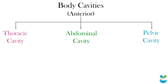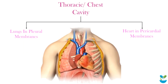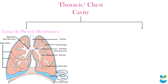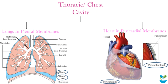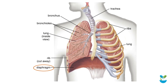On the anterior side, the body is divided into thoracic, abdominal, and pelvic cavities. The thoracic cavity, which is your chest cavity, is enclosed by the ribcage and includes the heart and a pair of lungs. Lungs are covered by the pleural membrane or pleural layers, and the heart by the pericardium membrane or layers. The diaphragm, which is a muscular sheet, separates the thoracic cavity from the abdominal cavity.